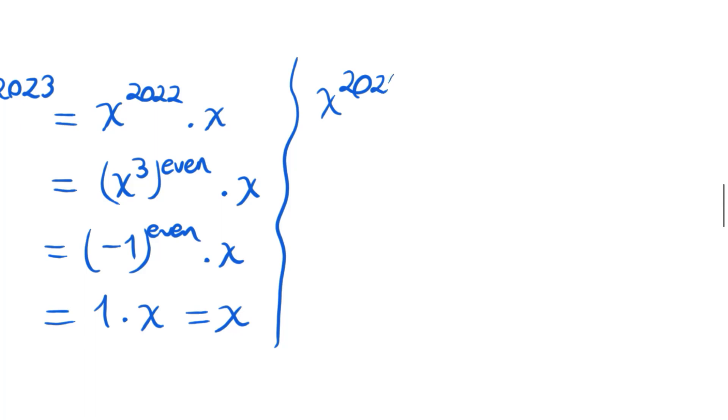This is the same trick: x cubed to some even power and x squared, and this is also 1 times x squared, which is x squared.